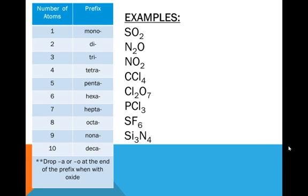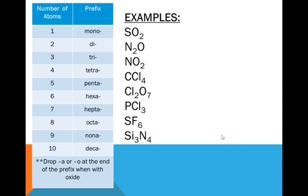Okay, here are some examples. Let's take a look. SO2. The name of the first element is sulfur. The name of the second element is oxygen, and we're going to change the ending to IDE. There's one sulfur, so we do not need the prefix. But there's two oxygens, so we need a prefix in front of the oxide. And the prefix for two is di. So it's sulfur dioxide.